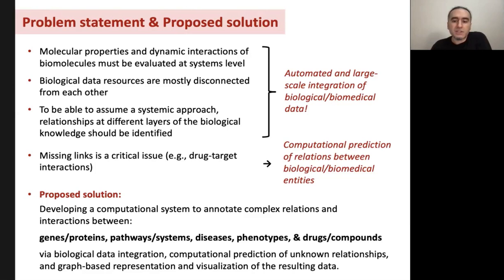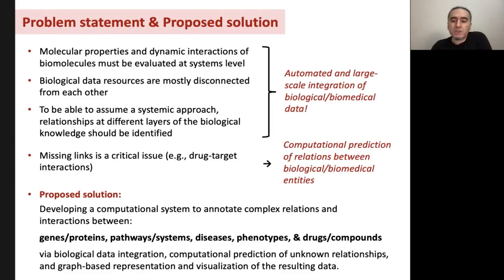Apart from that, a closely related problem is the missing relationships. There are numerous biological relationships that have not been identified yet, such as the interactions between millions of drug candidate compounds and target biomolecules. Our proposed solution to these problems is developing an open access system to annotate complex relations and interactions between genes, proteins, pathways, functions, systems, diseases, phenotypes, drugs, and compounds via biological data integration, computational prediction of the unknown relationships, and graph-based representation and visualization of the resulting relational data.